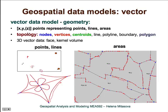An important component of the vector data model is topology, because topology defines the relationship between nodes, vertices, and centroids as they are represented, for example, for areas or for lines.